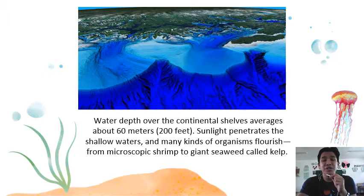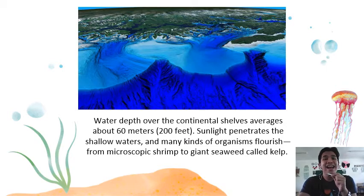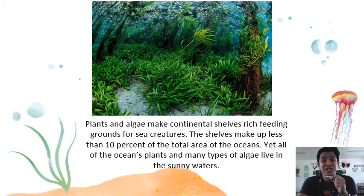Sunlight penetrates the shallow waters, and many kinds of organisms flourish, from microscopic shrimp to giant seaweed called kelp. Ocean currents and runoff from rivers bring nutrients to organisms that live on continental shelves. Here are examples of organisms present in continental shelves. We have plants and algae, which make continental shelves rich feeding grounds for sea creatures.